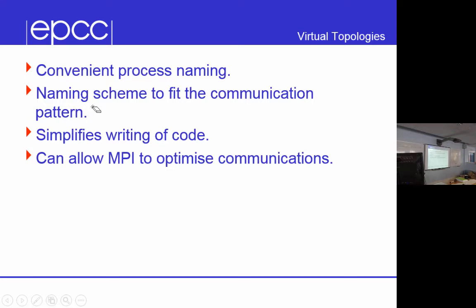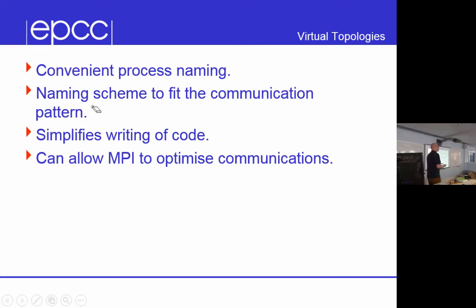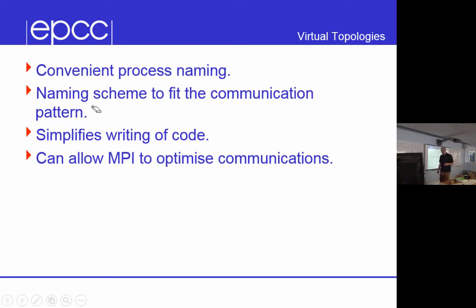You have a program, you split up your data or work across the processes in some specific way — you must know how you've done that because you've written a program to do it. But when you start MPI by default, all it has is a bunch of processes numbered 0 to N-1. Conceptually, it just has one single long list of them, and as far as the MPI library is concerned, processor 0 is just as likely to talk to processor 50 as it is to processor 1.